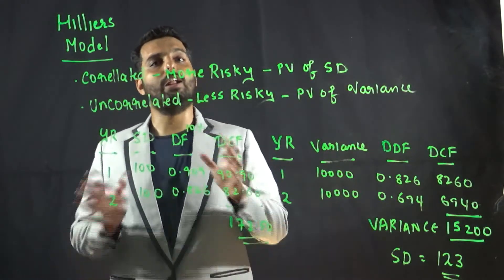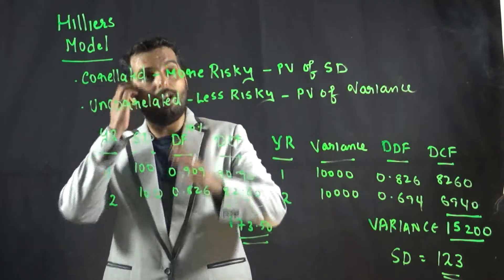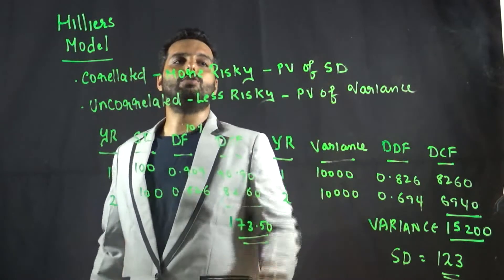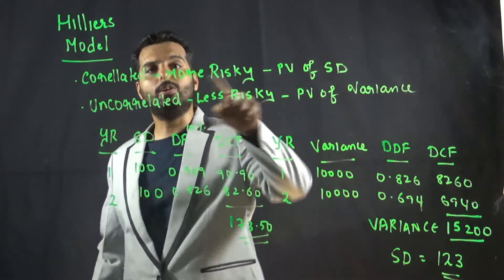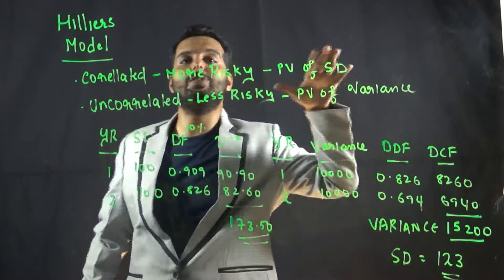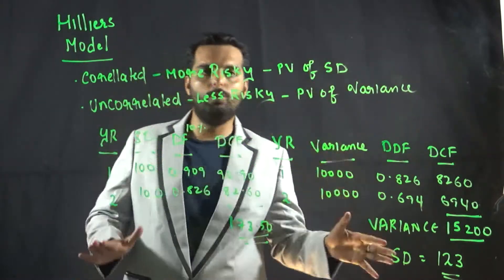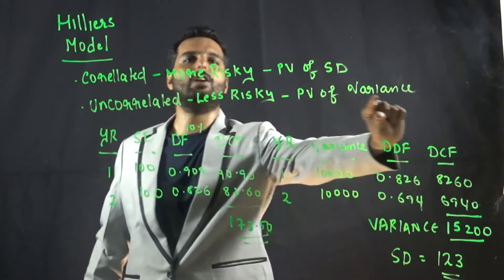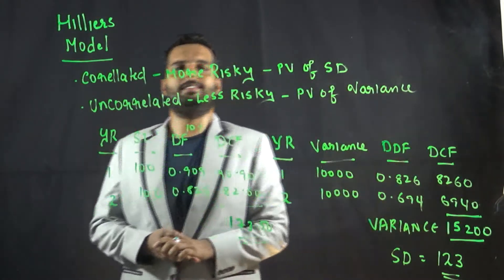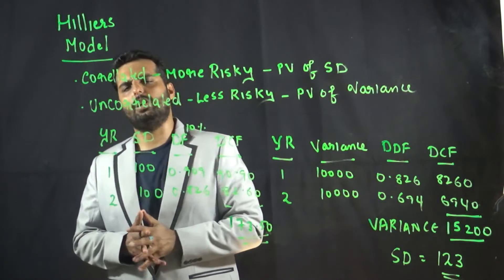So correlated cash flows present value of standard deviation, we get 173, which is a higher number. Uncorrelated, we get the number as 123, which is a lower number. Hence proven that if it is correlated, it is more risky, and if it's uncorrelated, it is less risky.